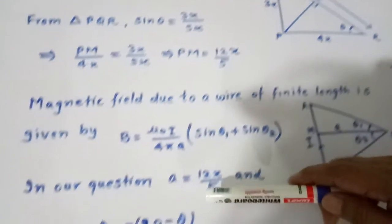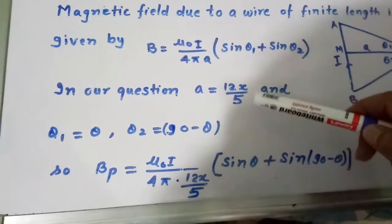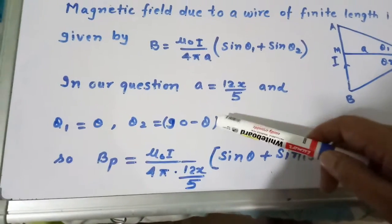So we put the value as A equal to 12X by 5 which we have just evaluated. θ₁ is θ, θ₂ is 90 minus θ.